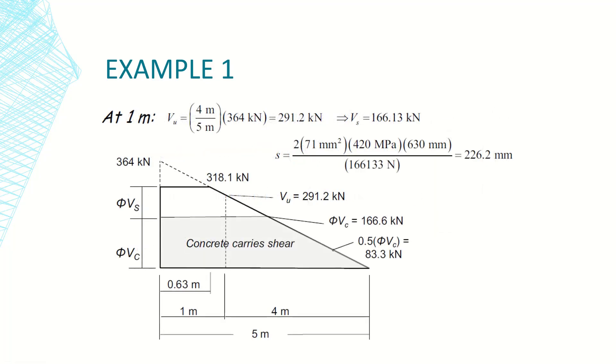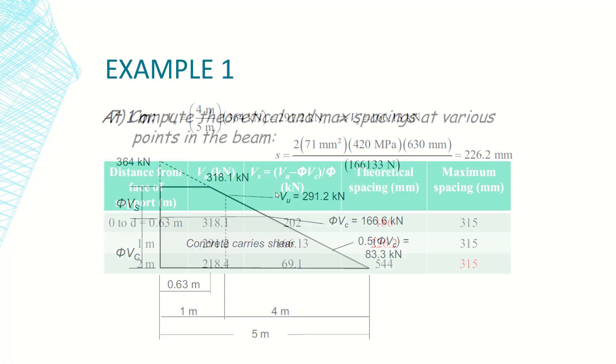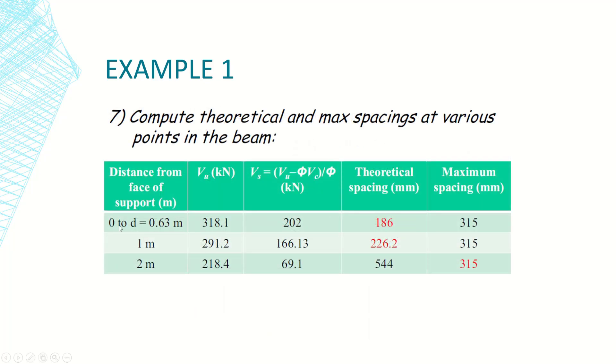Now we start to divide the beam into zones. For each one meter we took a station, so at one meter we determine the value of v ultimate also using similarity of triangles, and also determine the corresponding spacing required. So at one meter we are going to design this part for this value 318.1. Then we took another station at another one meter and this zone between one to two meters will be designed as per the maximum value which is 291.